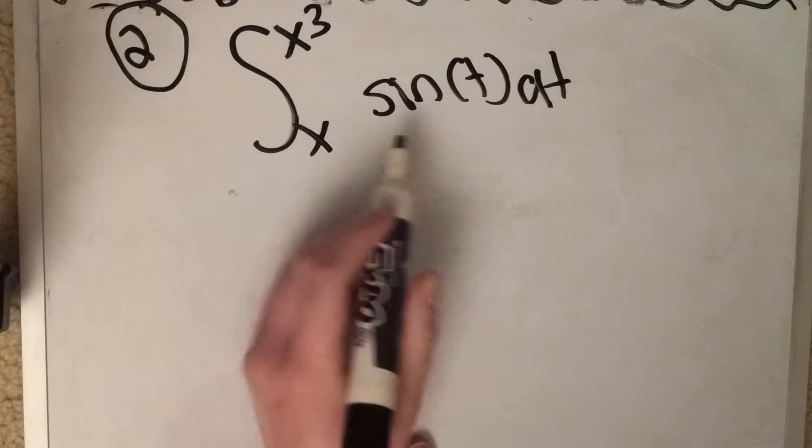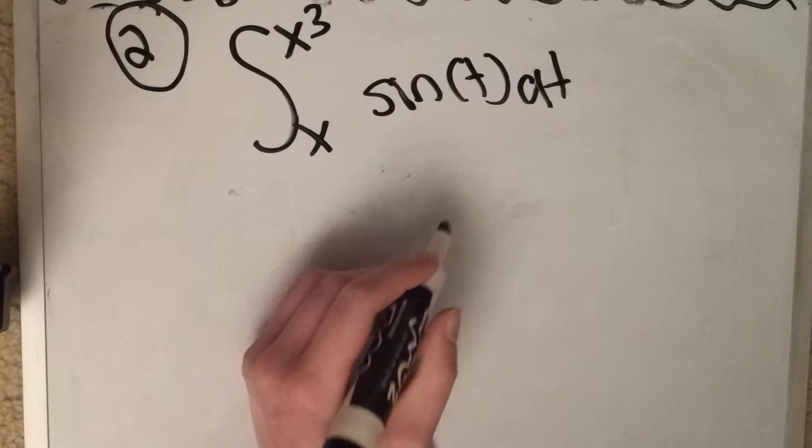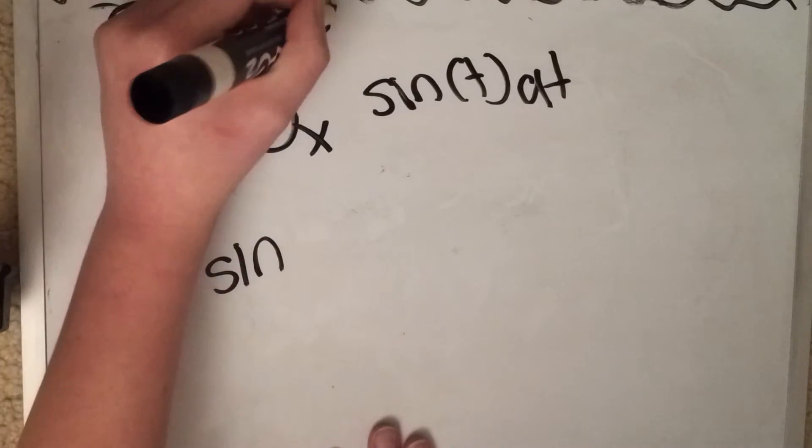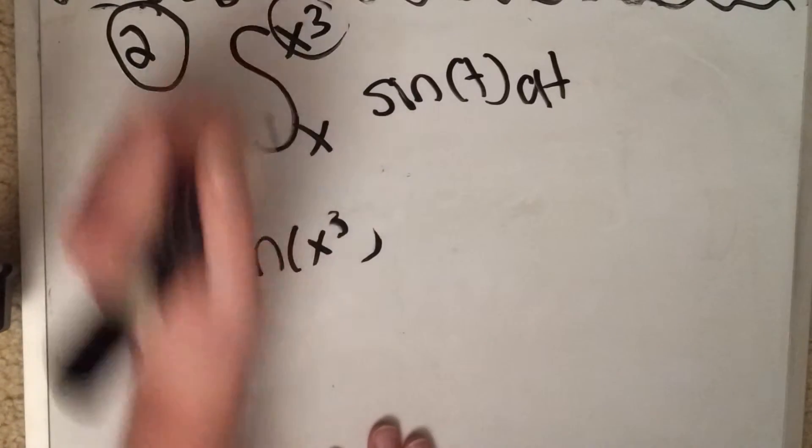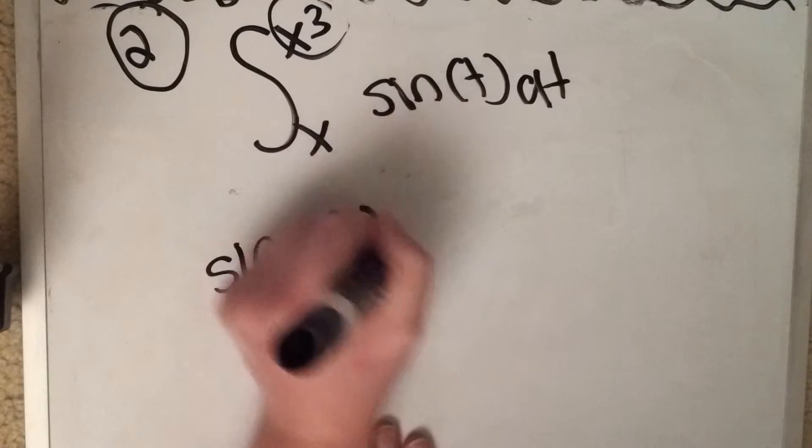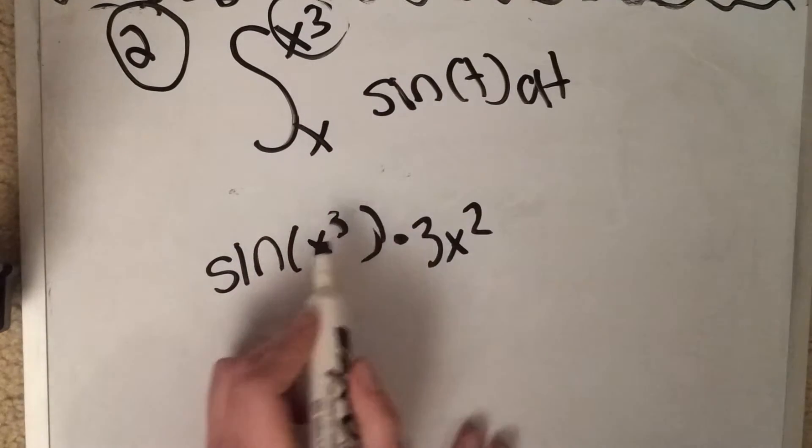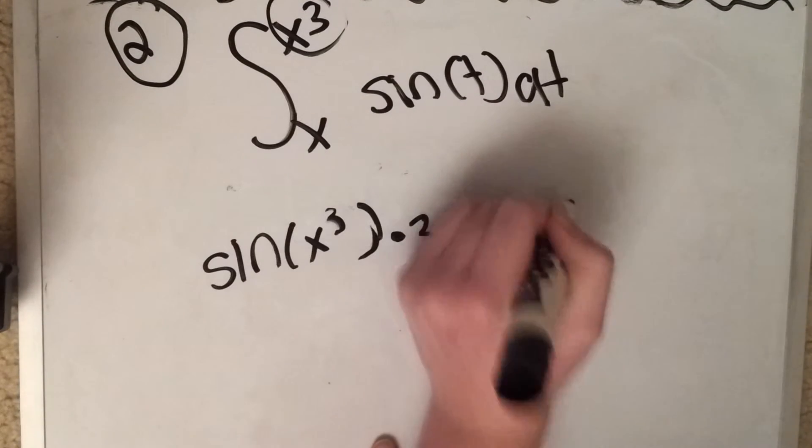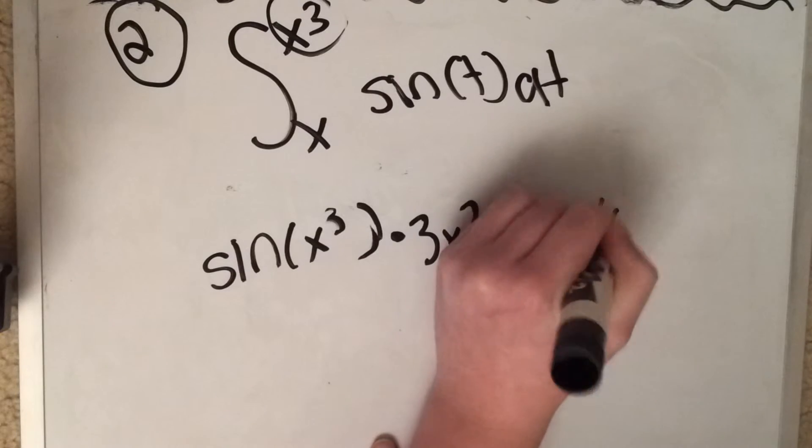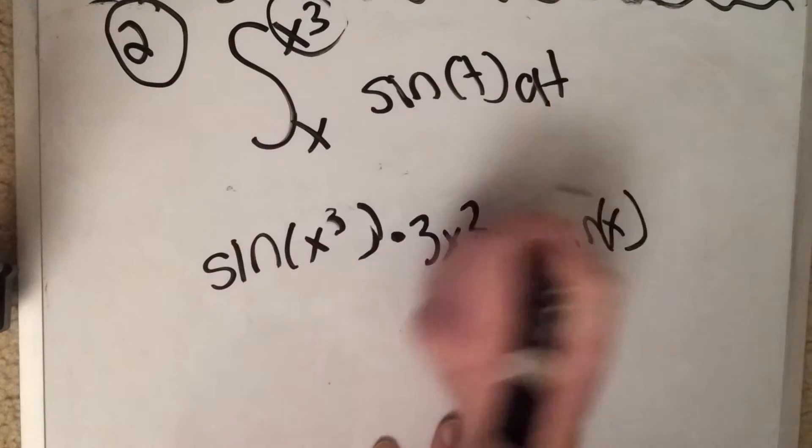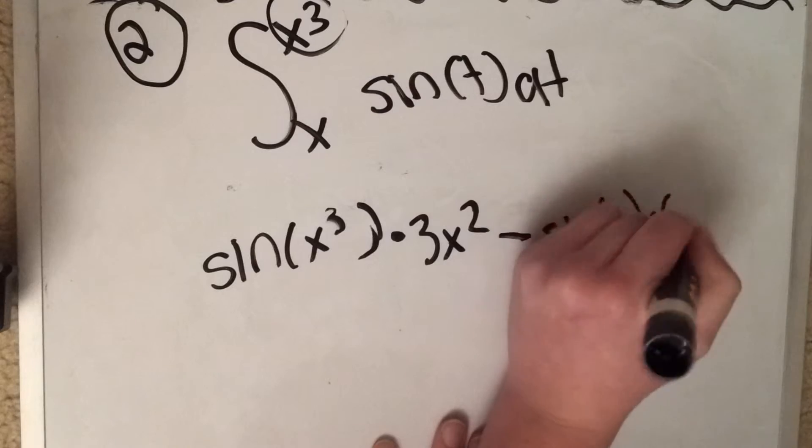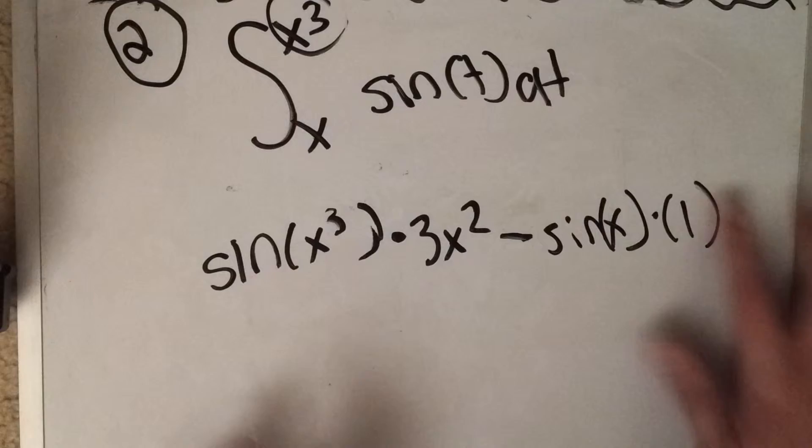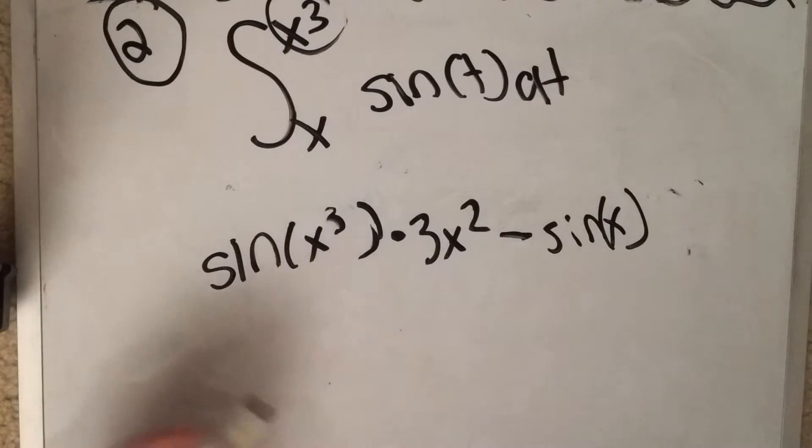So basically you're going to do kind of the same thing as you have been doing. So plug in first, plug in the upper one. Sine of x cubed, don't forget chain rule, so multiply by the derivative, same answer as before, right? Well now subtract the lower one, and you've got to plug in the lower one. In this case it's just sine of x. Now because it's an x, the derivative is one and we don't need to worry about that. You can show a one if you want, and it doesn't matter. So this is going to be your answer. This is not needed.